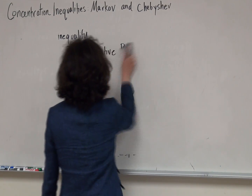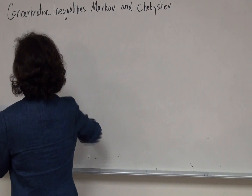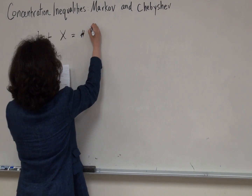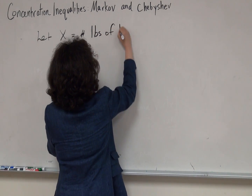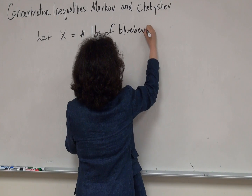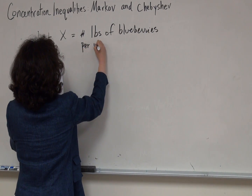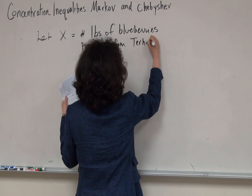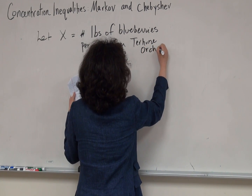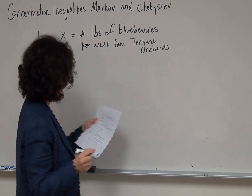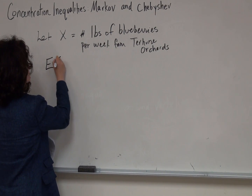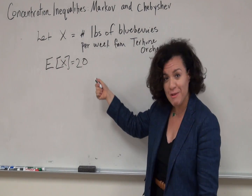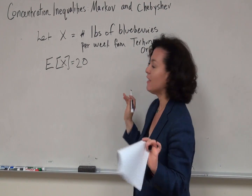Let x be the number of pounds of blueberries produced per week from Torhune Orchards — a lovely orchard in Princeton, New Jersey; the blueberries are really good. We're told that the expectation of x is 20, so they're only expected to produce 20 pounds of blueberries a week, which is probably why they're so expensive.